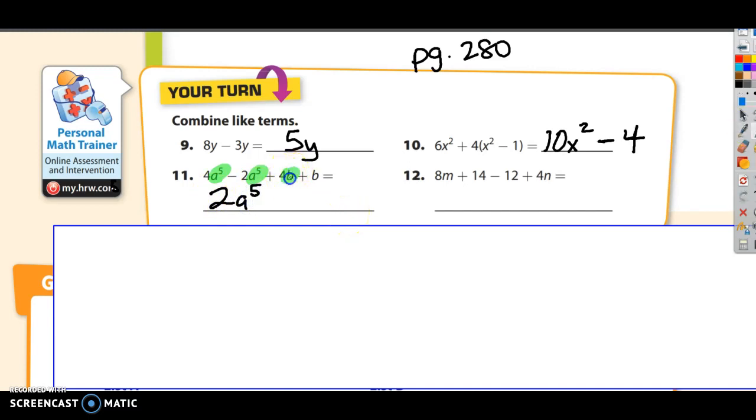And then you've got some b's. You've got 4 b's and another b. 4 b's and another b is 5 b's. And this positive sign right here means we add them. And you can't add the 2 and the 5 because these are a to the 5ths and these are b's. You can't combine those.